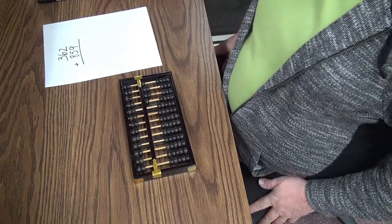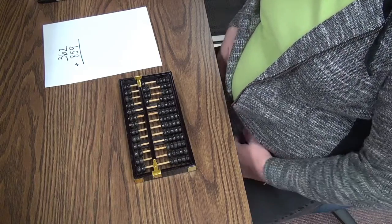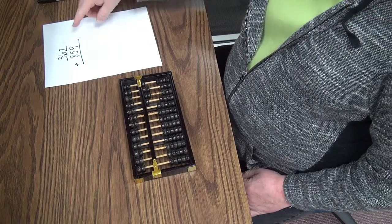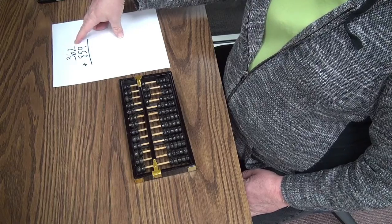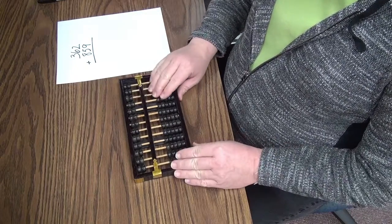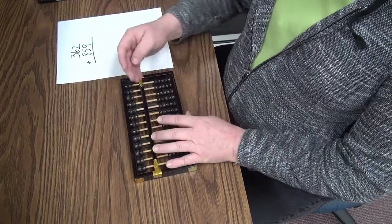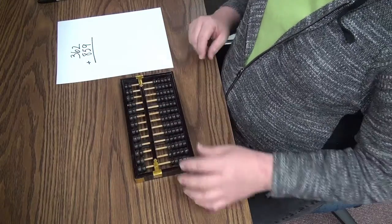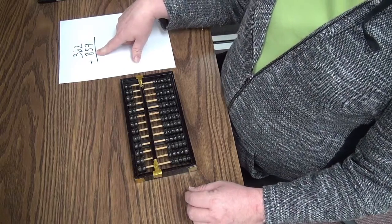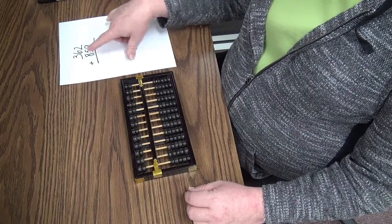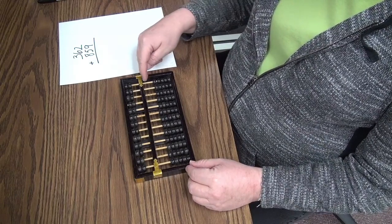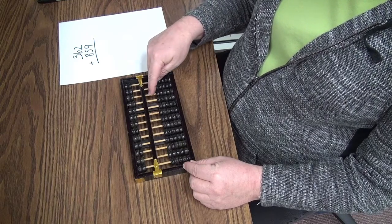Now we will do some addition using a Chinese abacus. We are going to add 362 to 859. So let me clear the abacus, everything cleared away from the center beam. We are going to start on the left side, and we are going to add 800 and 300. And so what I will do here is, here is my singles, my tens, my hundreds.